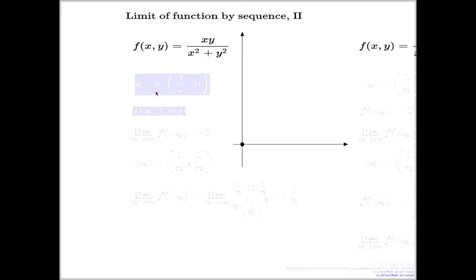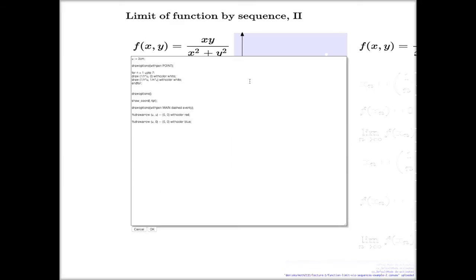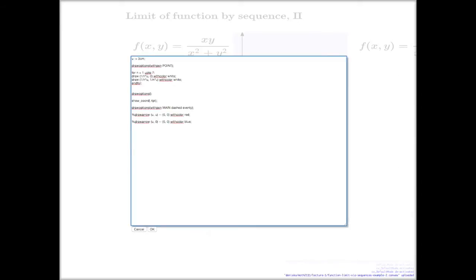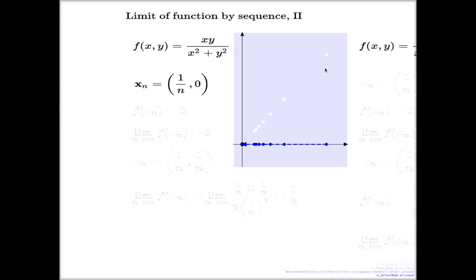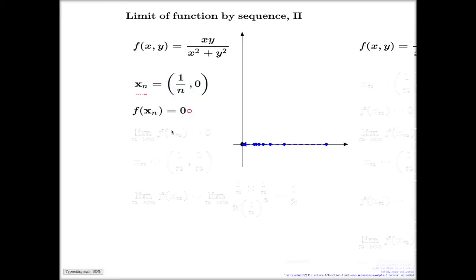For this function, if I take this sequence of points which approach the origin on the x-axis from the right-hand side — approaching origin on the horizontal level — if you compute the function on this particular sequence, it will be 0. And the limit across this sequence will be 0.